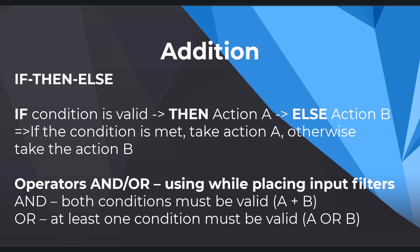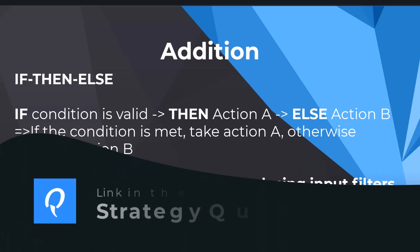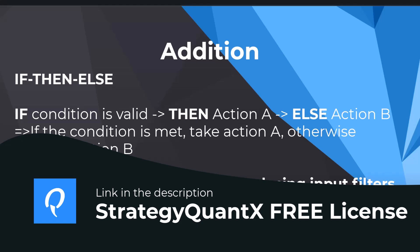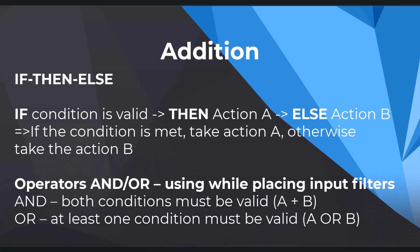Let's add something more. If a condition is valid, then action A is taken — and you can also see the so-called ELSE, which works like this: if condition is met, take action A; if not, take action B. This is just for you to know what it is when you see it in Algo Wizard. We also talked about the operator AND, where both conditions have to be met at once. We can also use the OR operator, which says that at least one of the conditions must be valid. In practice, it would be for example Monday or Tuesday — it can be both days, but at least one of these days must be there.